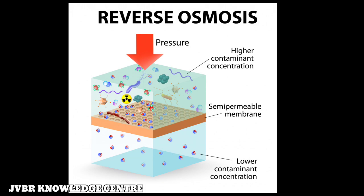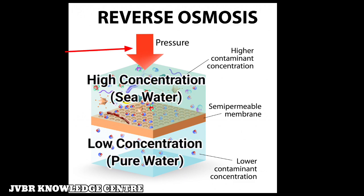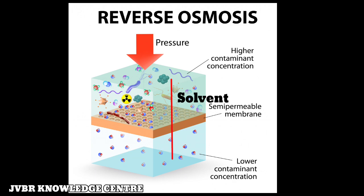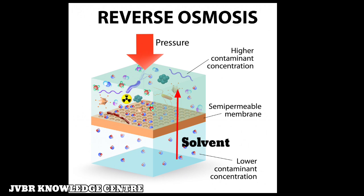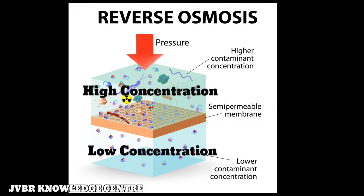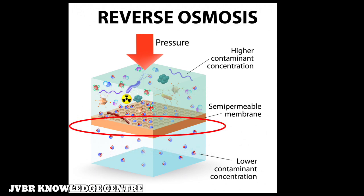Reverse osmosis is a process in which pressure greater than the osmotic pressure is applied on the high concentration side of the membrane, causing the flow of solvent to move from the concentrated side to the dilute side across the membrane. Osmosis is the phenomenon by virtue of which flow of solvent takes place from a region of low concentration to high concentration when two solutions of different concentrations are separated by a semi-permeable membrane.